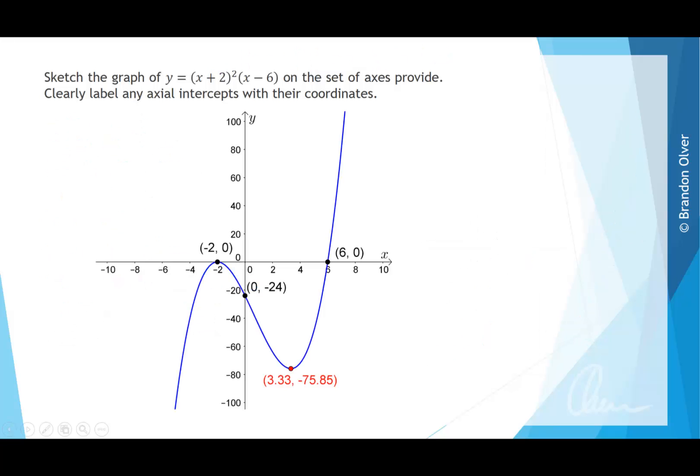On this slide, we've graphed the cubic equation using a computer program, and it's a little bit more accurate than our by-hand sketch, but you can see that all the key features remain the same. We've also got the computer to label the local minimum or turning point at approximately (3.33, -78.85).